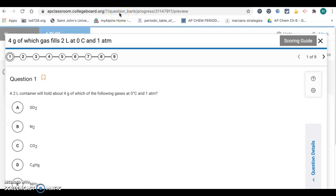All right, this is a screencast for the 3.4 to 3.6 quiz. So question one, we have a 2 liter container will hold about 4 grams of which of the following gases at 0 degrees Celsius and 1 atm, 1 atmosphere.